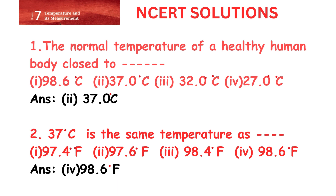Question 1: The normal temperature of a healthy human body is close to — options: 98.6°C, 37.0°C, 32.0°C, or 27.0°C. The correct answer is option 2: 37.0°C.